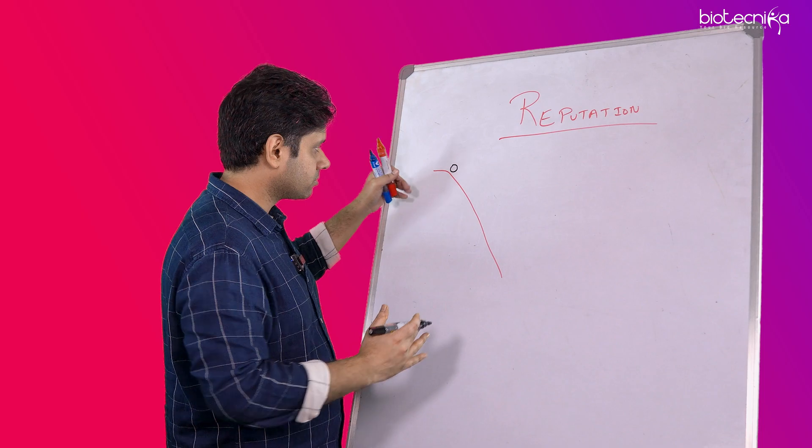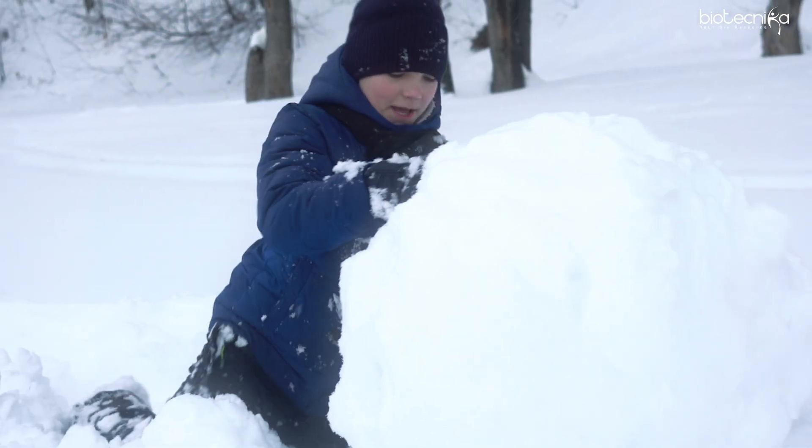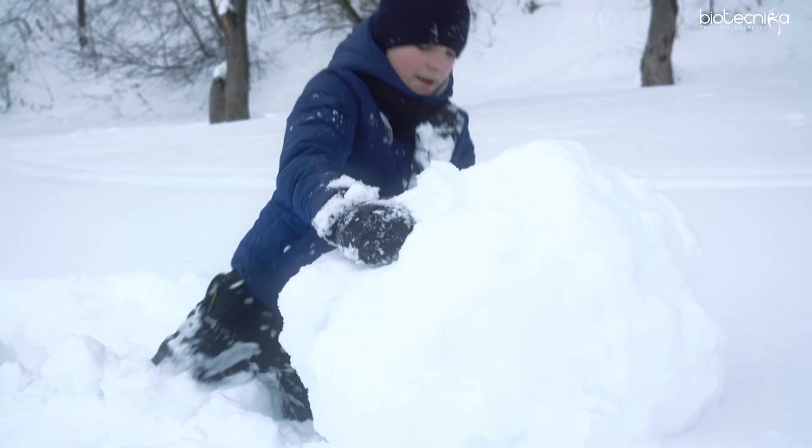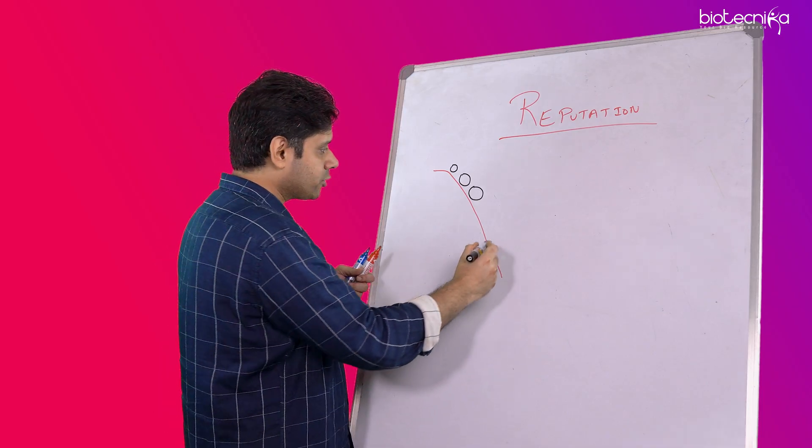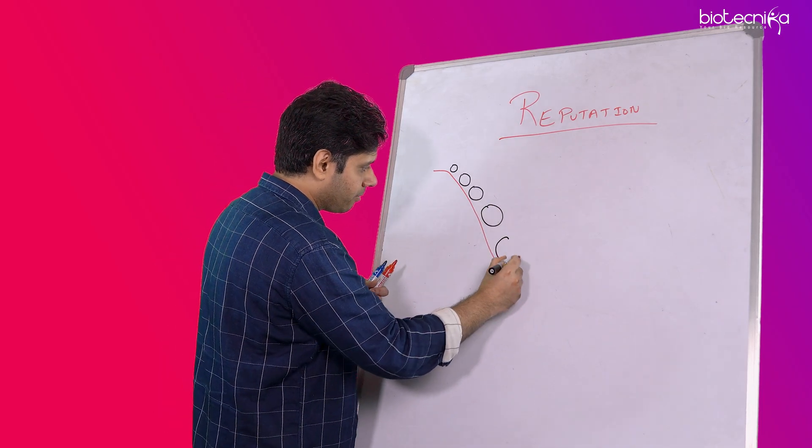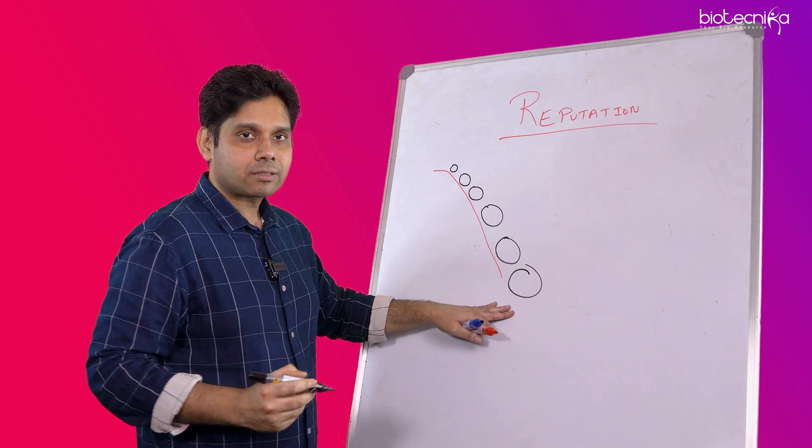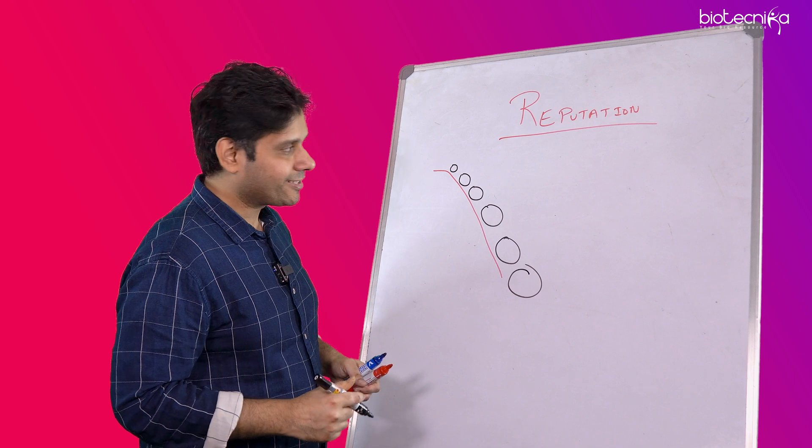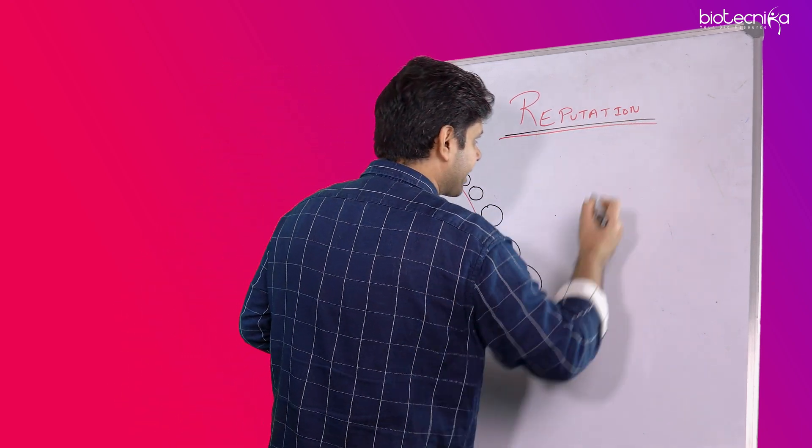it keeps rolling down, of course because of gravity. But while it keeps rolling down, it will gather more snow around it. So by the time it reaches the bottom, it would have become a bigger ball of snow. That's called compounding, basically, or the snowball effect.